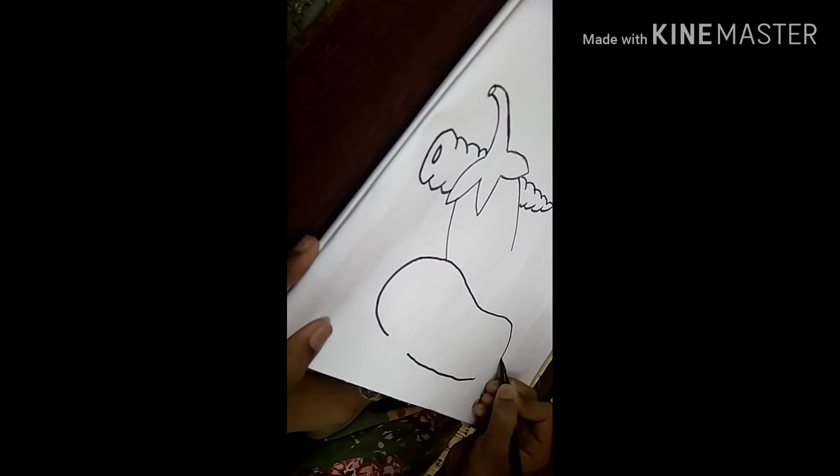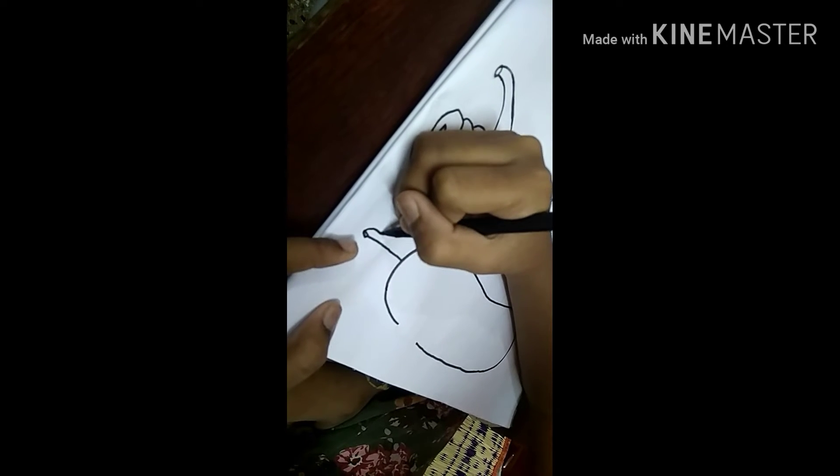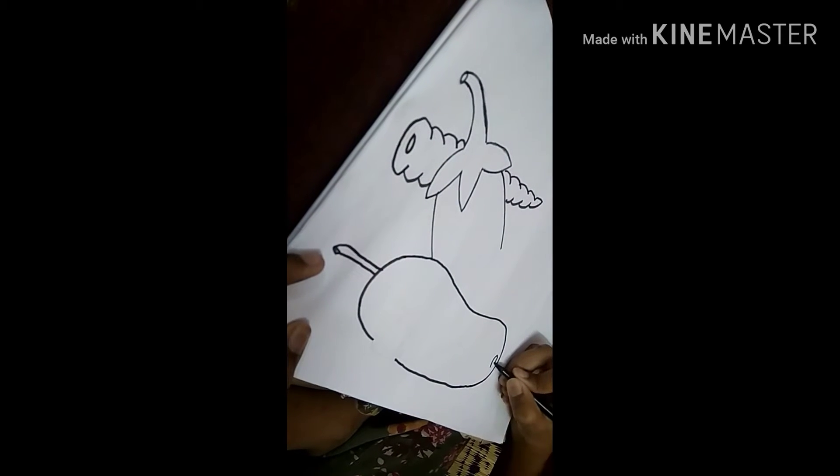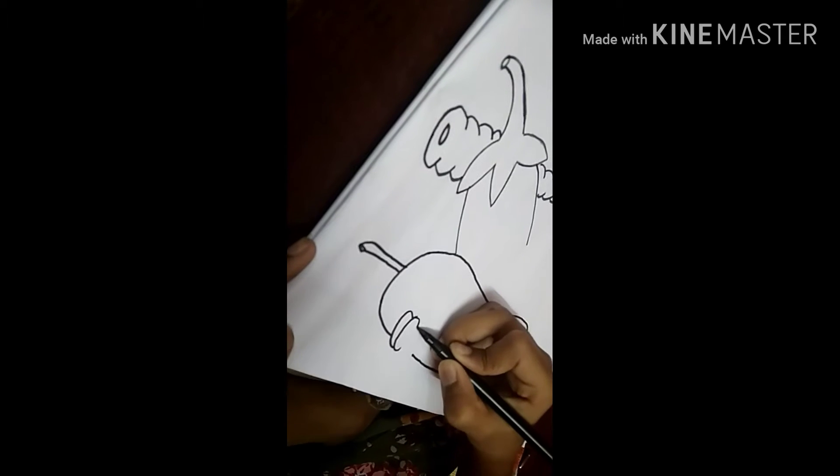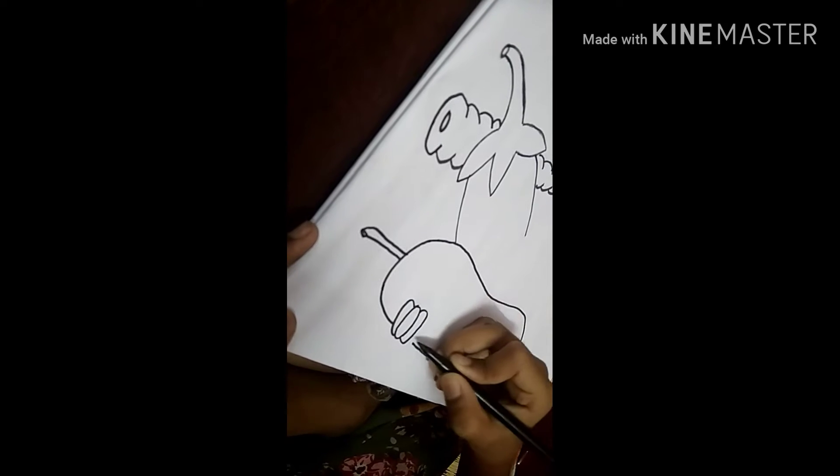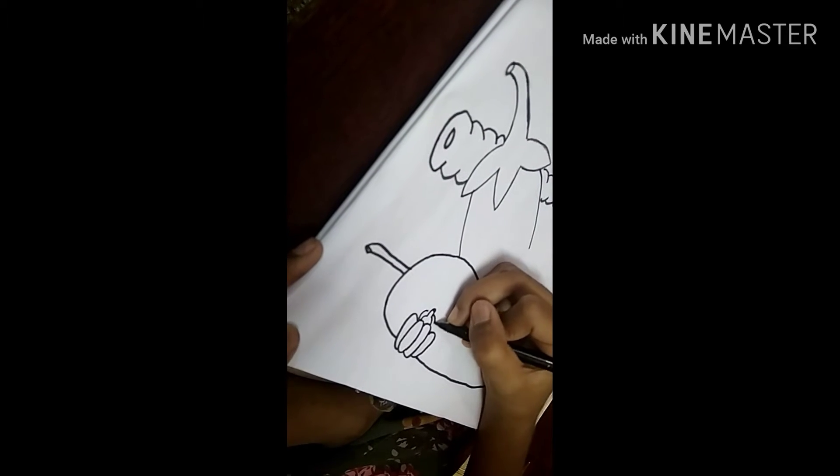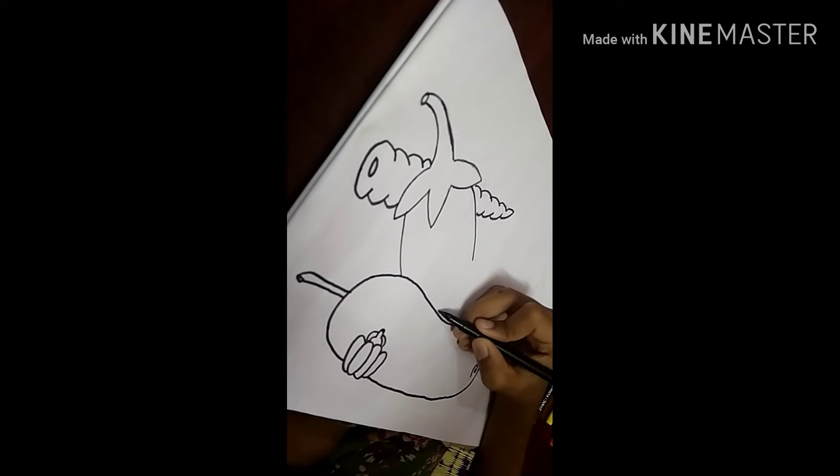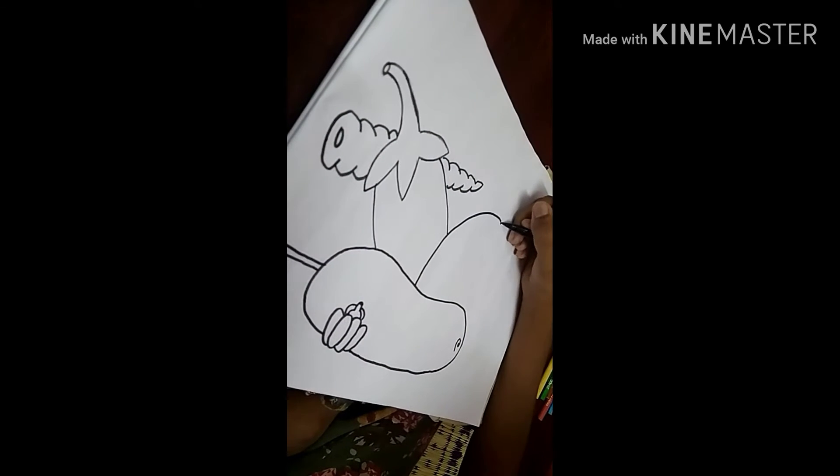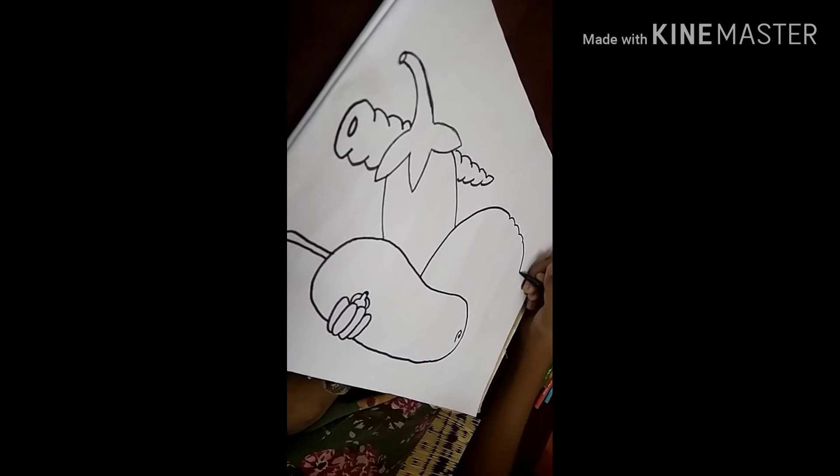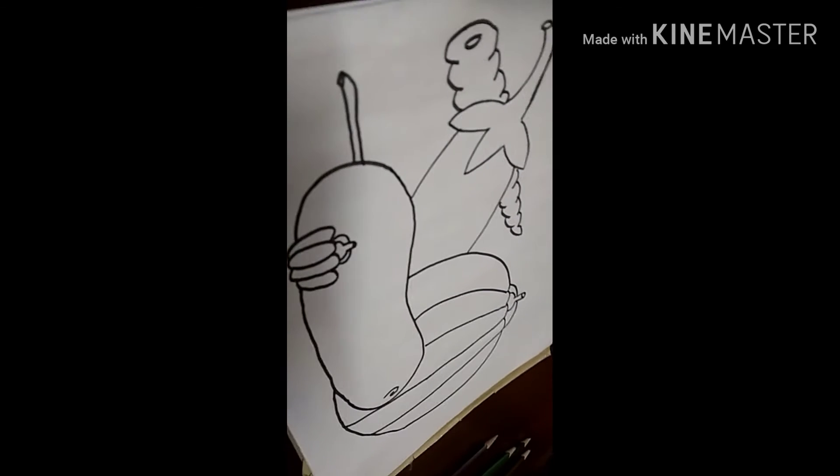We will leave some space for the capsicum. Now our bottle guard is ready. Let's draw capsicum. Now we will draw a pumpkin. Now our outline is ready. Let's color it.